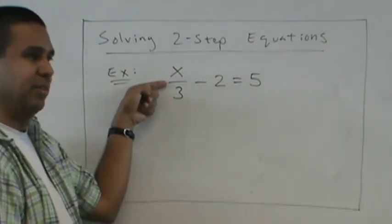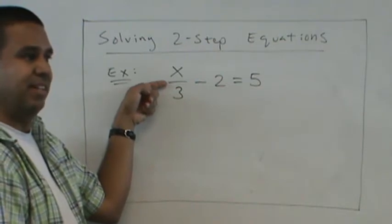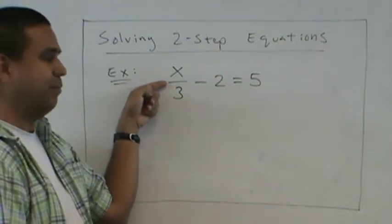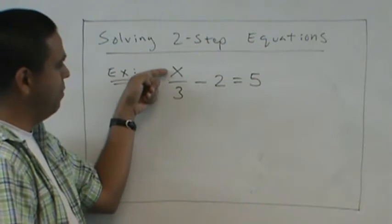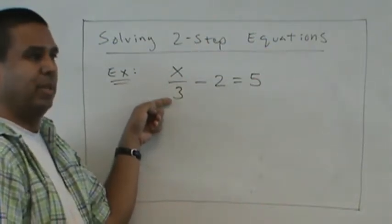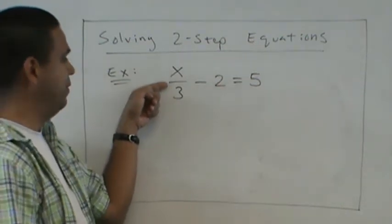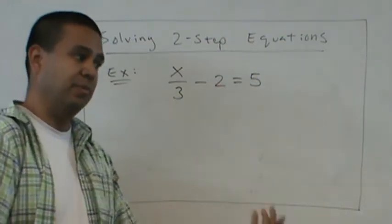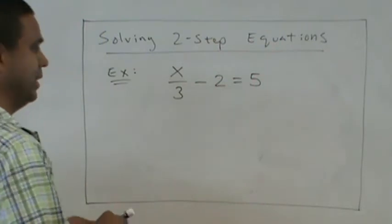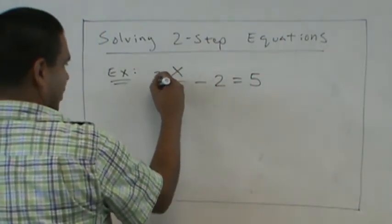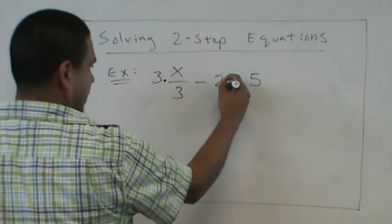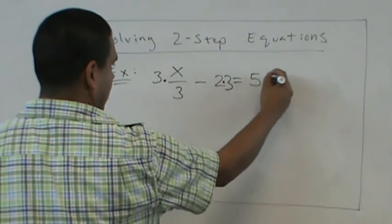So the fraction means what? Add, subtract, multiply, or divide? Divide. So fraction means division. So this is a number divided by 3. So what's the opposite of divide? Multiply. So if we divide it by 3, we should multiply by 3. So we're going to multiply every term by 3.